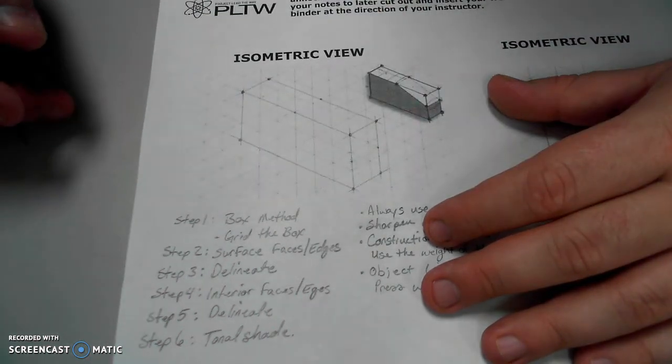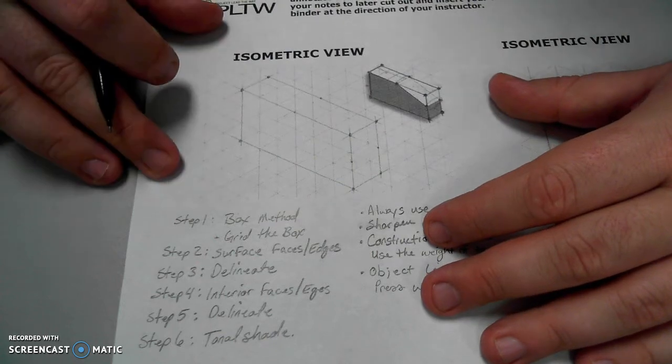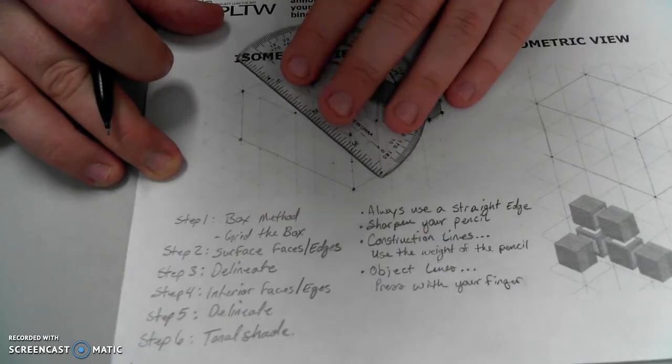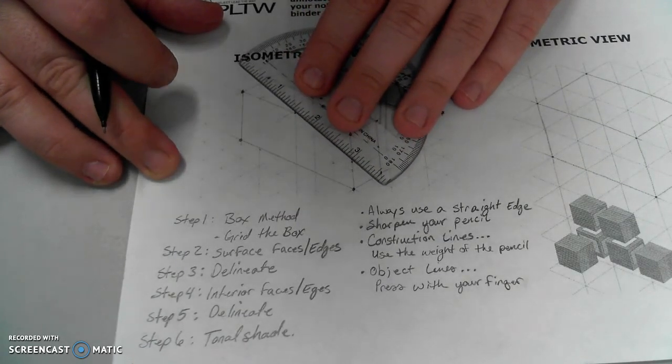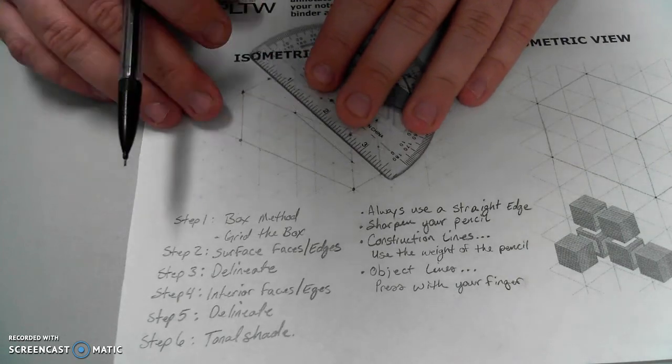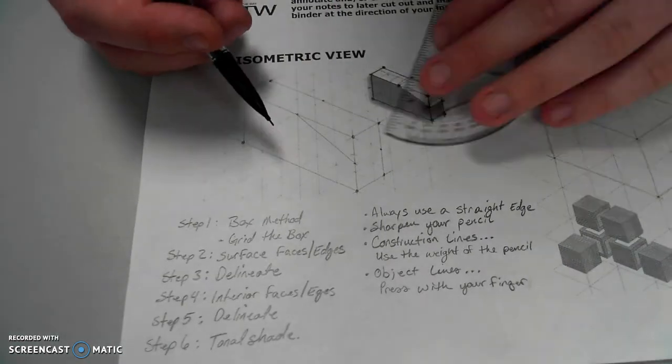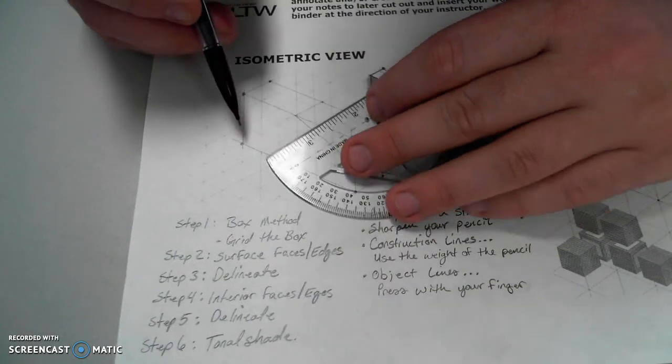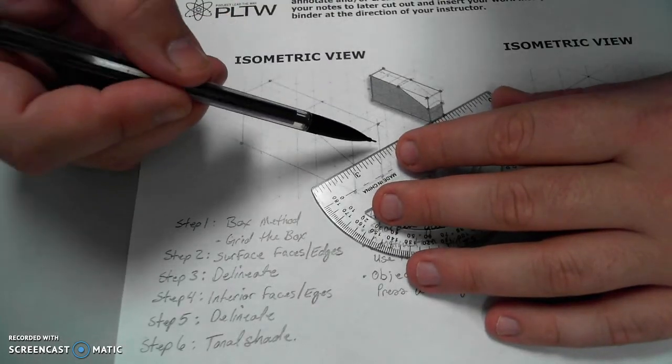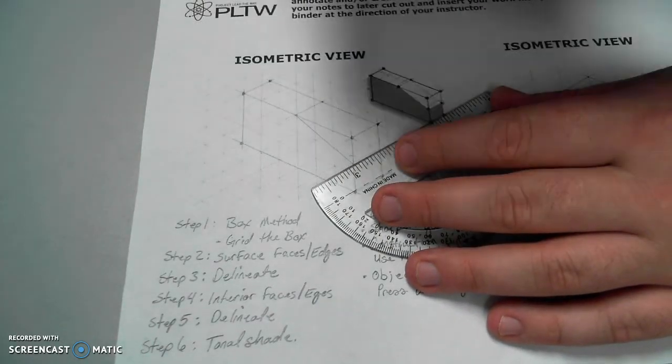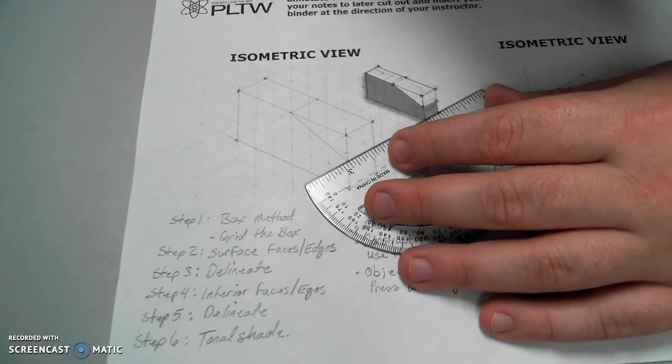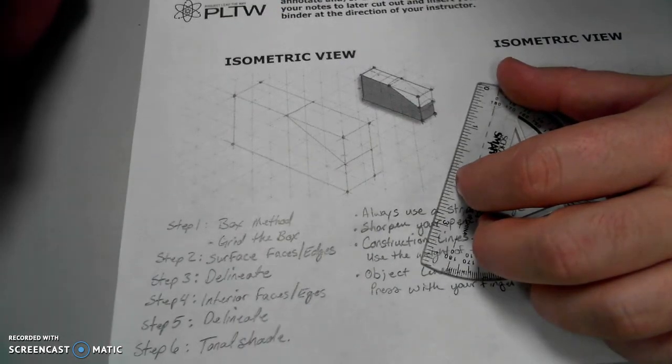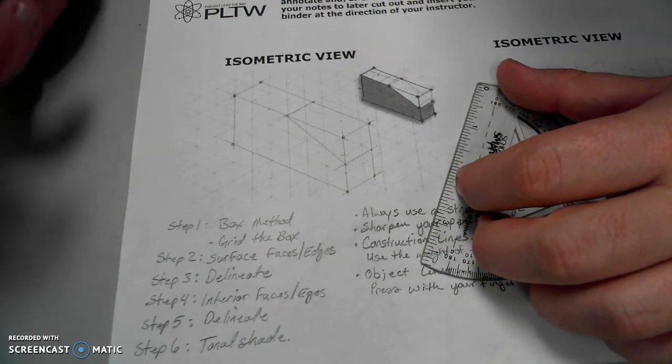As I go in and draw the only construction line that's needed for the surface on the front, and the top, and the right. Again, using construction lines. Nice and light. Very light. Very easy to draw. Very easy to erase as well.